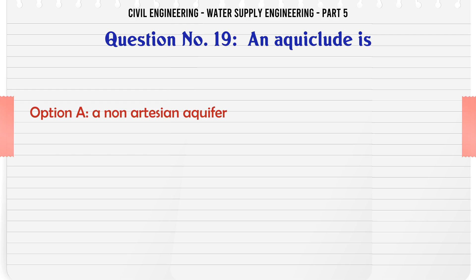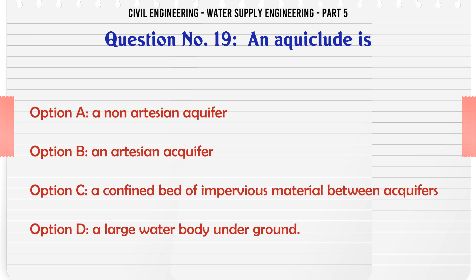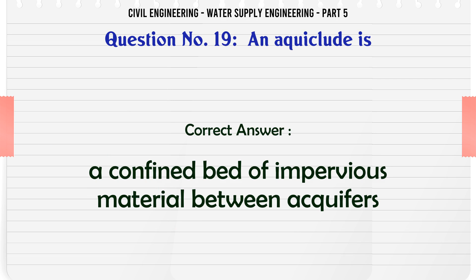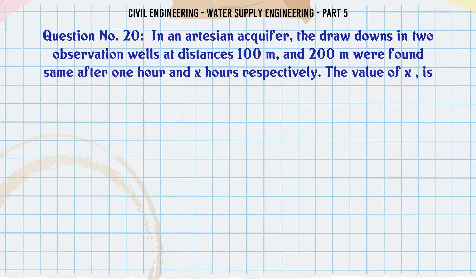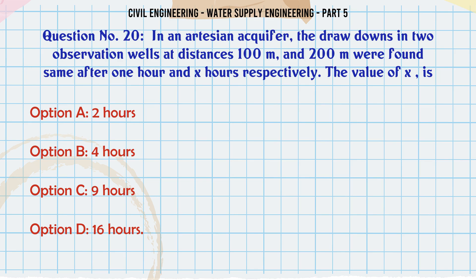An aquiclude is: A. A non-artesian aquifer, B. An artesian aquifer, C. A confined bed of impervious material between aquifers, D. A large water body underground. The correct answer is: A confined bed of impervious material between aquifers.